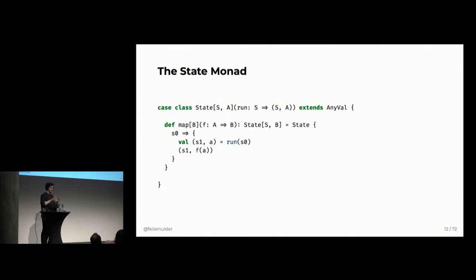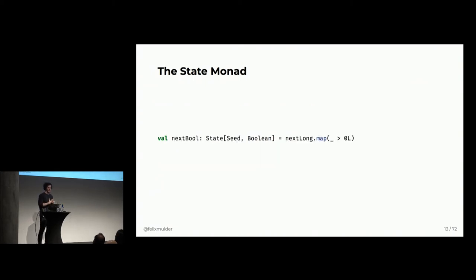So, let's implement this in a naive way. We'll simply do map as you usually see it. You take a function from A to B and then we create a new state. So, in the new state we just simply put some function from S0. Then we run the outer context up there with that S0. We get out the next state and a value. And now we can simply pass along as a tuple S1, the new state, and then map the value A that we got out of it. Simple enough, right? So, now we can express next boolean simply by mapping over next long. So, now we have a random boolean generator for free.